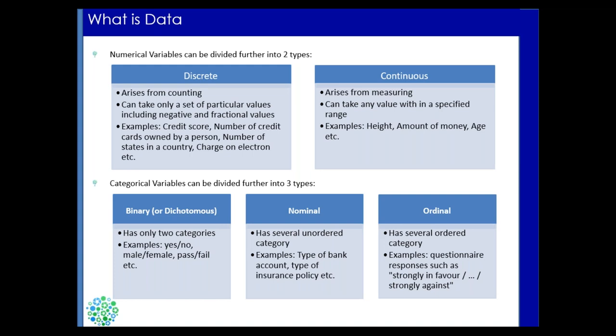The third type is ordinal categorical variable, where ordering is very important. For example, dividing marks distribution in a class into ranges of low, medium, and high — ordering plays a role. Another example: when you rate something online on a scale of 1 to 10, where 1 is strongly against and 10 is strongly in favor, ordering is important — you can't place 1, 2, then jump to 8 or 9.